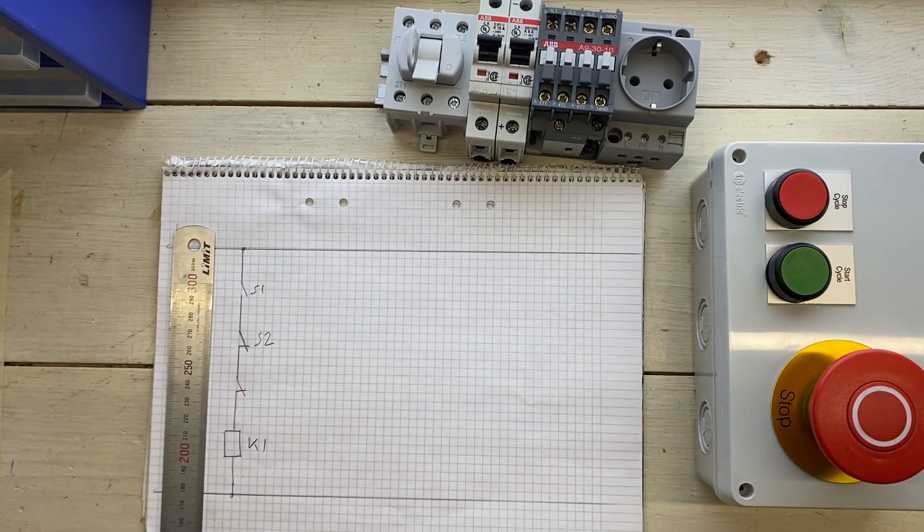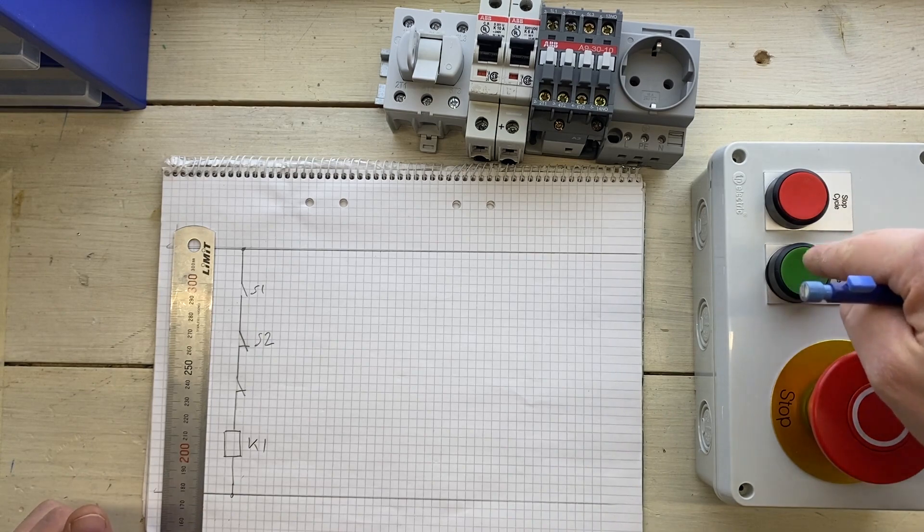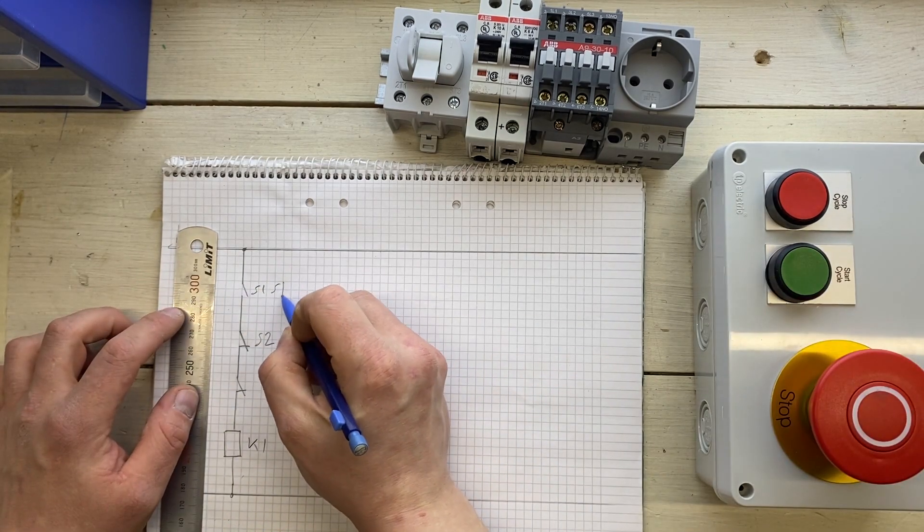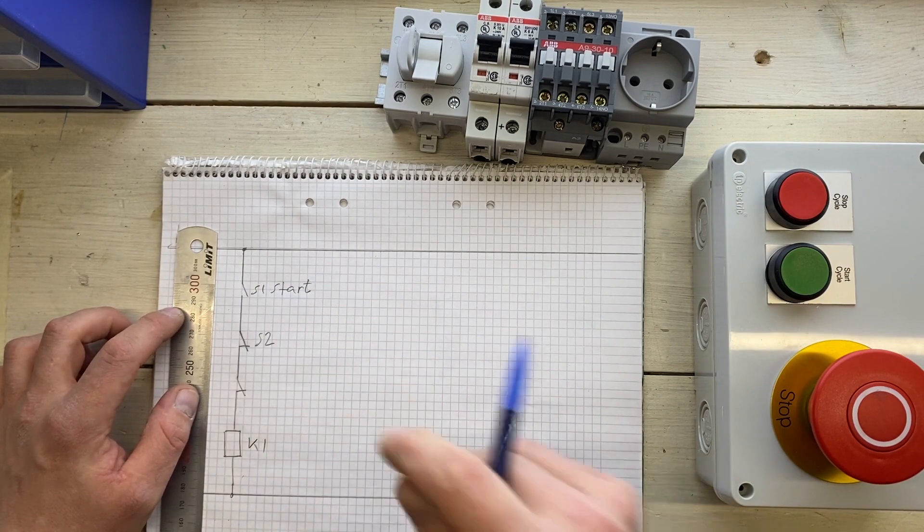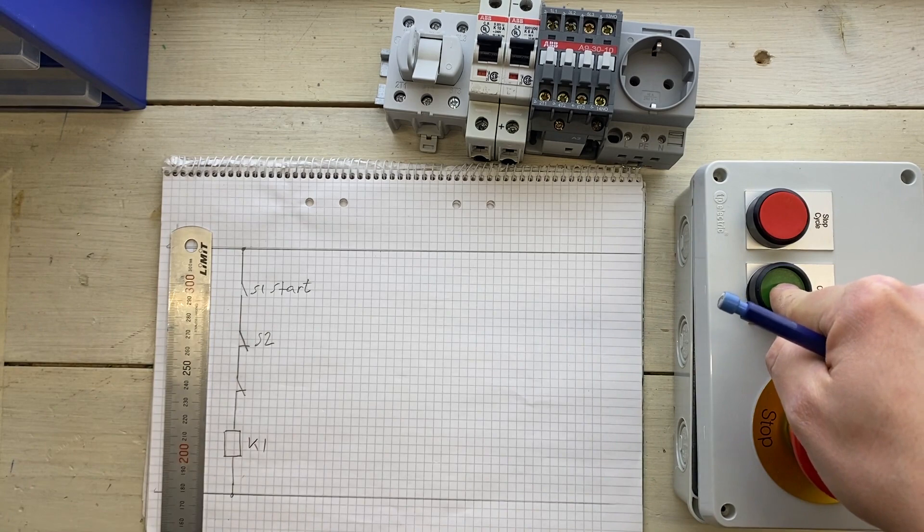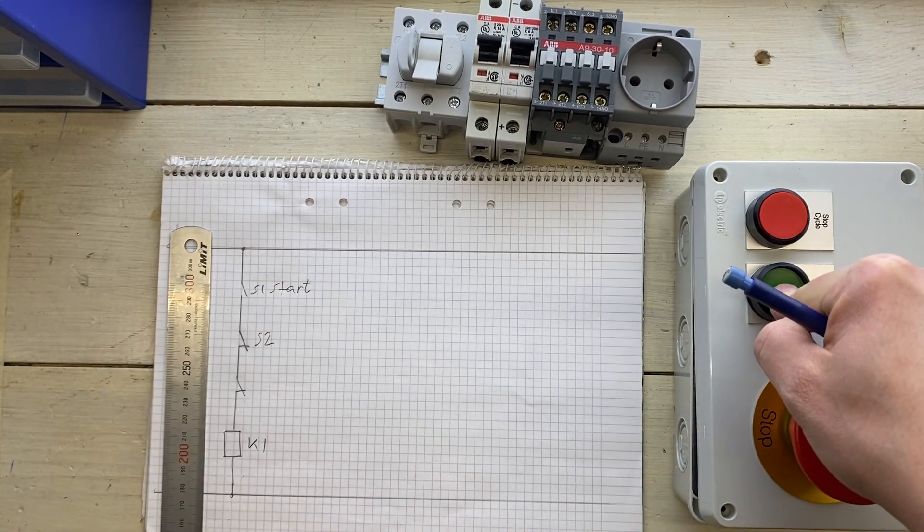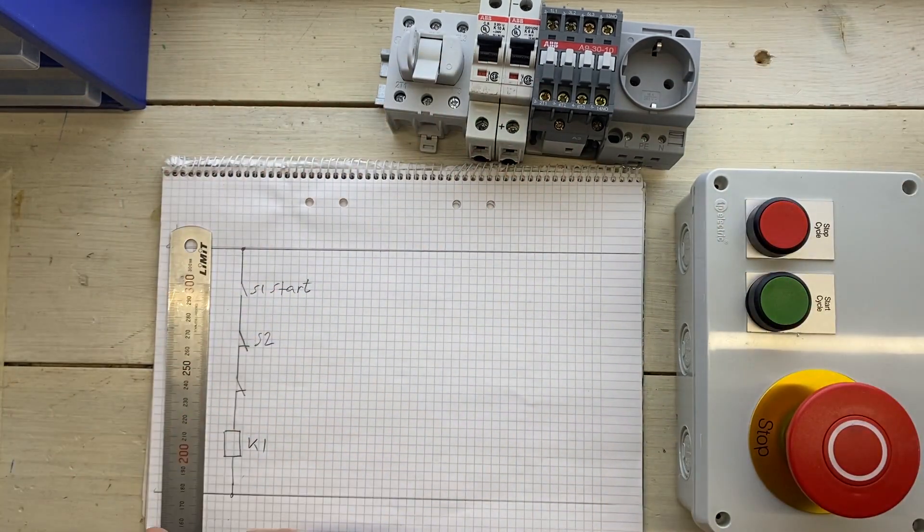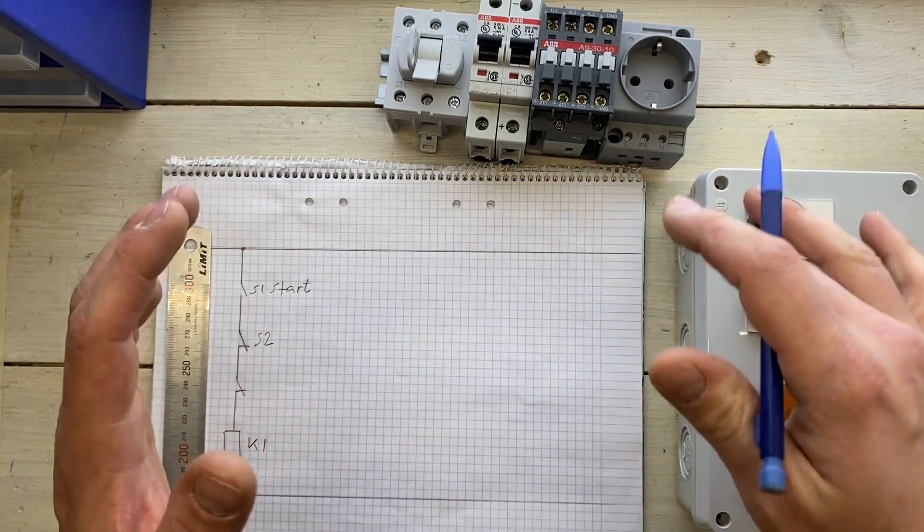That's for pulling the contactor and closing the circuit. We can name this one K1. So this is our first step in the layout. So what will happen here is that when we push the start cycle button, the start switch will close and the contactor coil pulls and this one closes. But as soon as we release this button, the contactor will open again. And that's not what we want, we want it to hold itself.